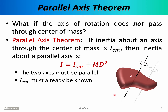Now suppose someone says they don't want to rotate this object relative to this axis. Instead, they want to rotate it relative to a different axis. Notice this second axis does not pass through the center of mass, but it is parallel to the first axis of rotation. In this case, you can use the parallel axis theorem.